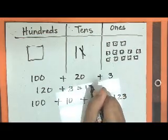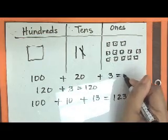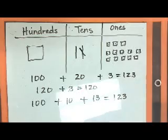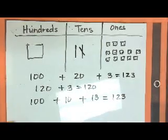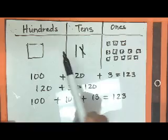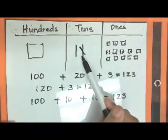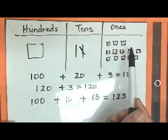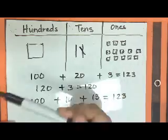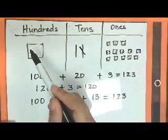So it doesn't matter which way I add it, my sums will all be 123. Now key points to point out is that we are never regrouping to the left. We're always regrouping to the right.